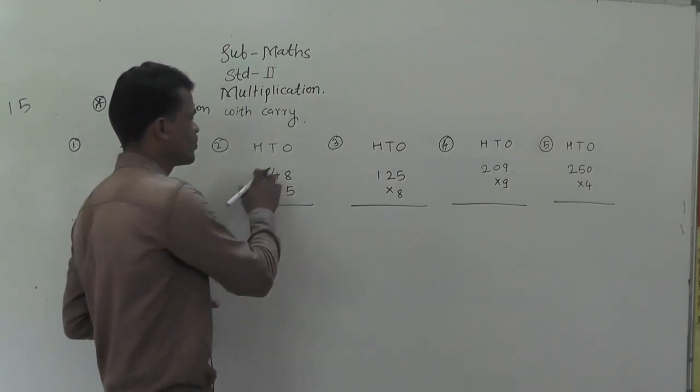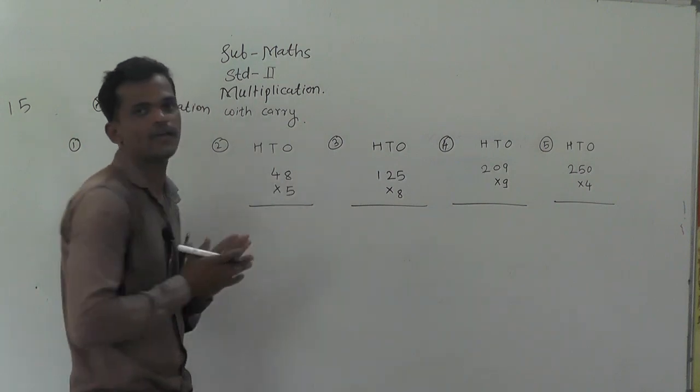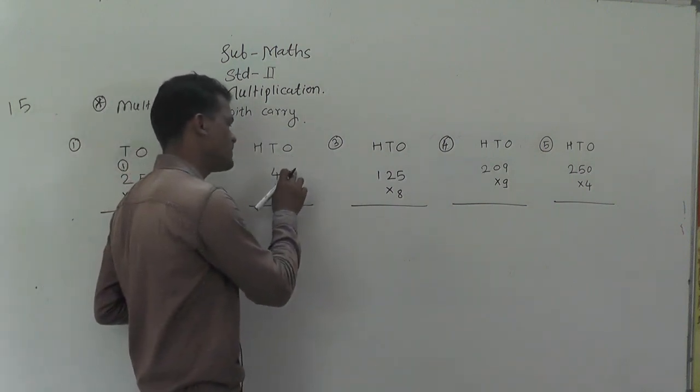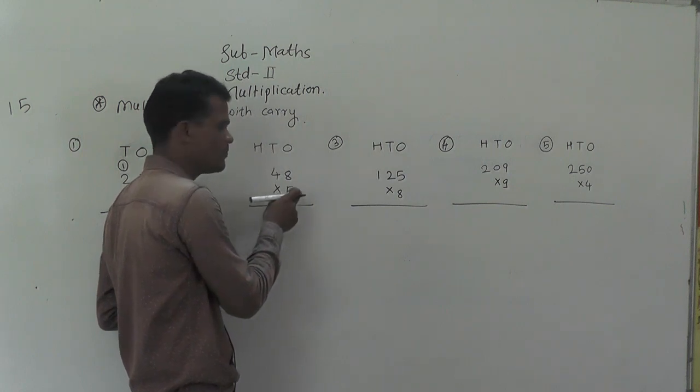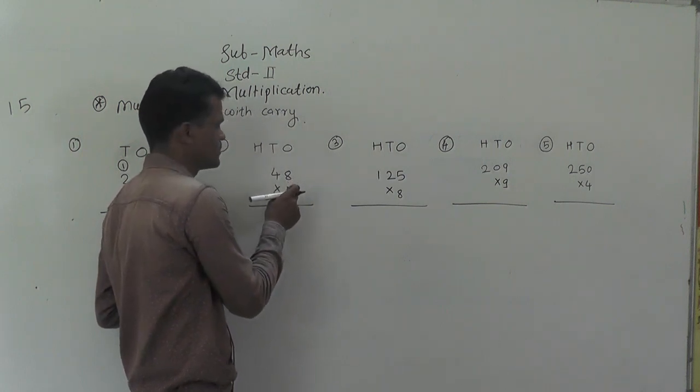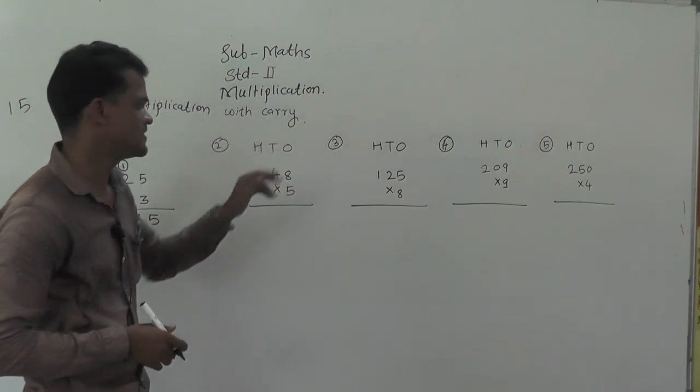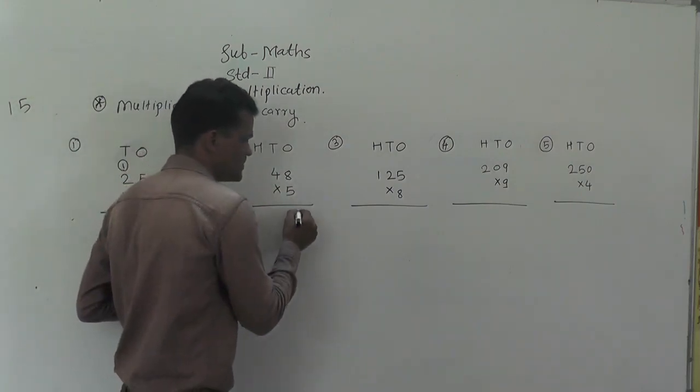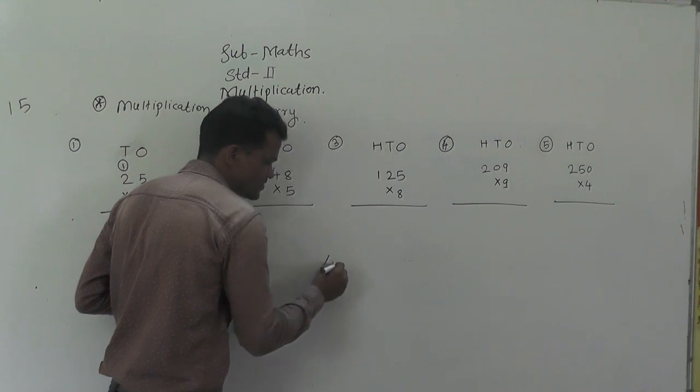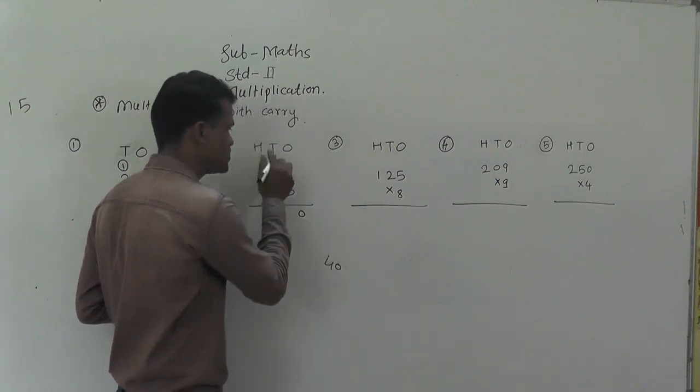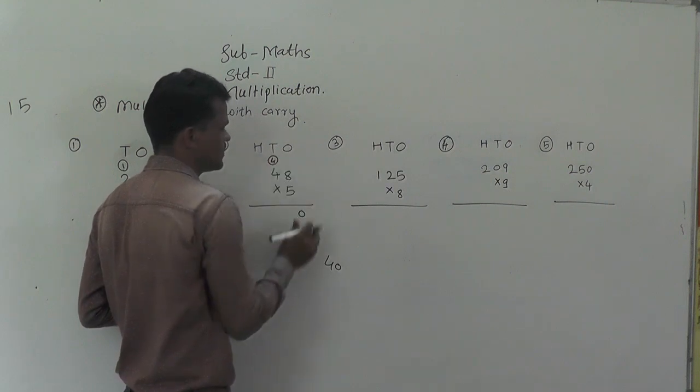Next example: 48 multiply by 5. First multiply the ones place digit by 5. 5 times 8 is 40. We write it like this: 4, 0. Ones place digit right here, and tens place digit carries to the tens place.